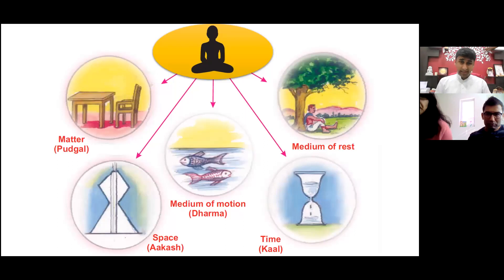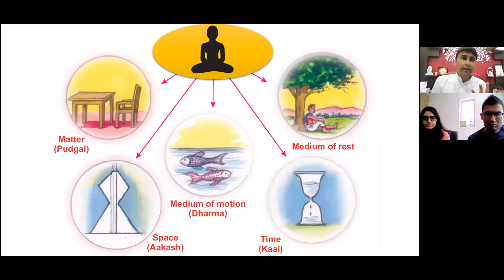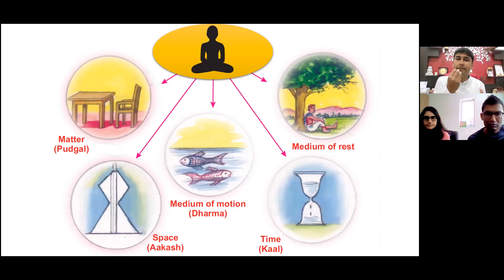With its consciousness, the soul can know and feel. The Purgal — the matter — has the basic qualities of touch (Sparsh), taste (Ras), smell (Gandh), and color (Vorn). So the four special attributes that Purgal has are Sparsh, Ras, Gandh, and Vorn. We can touch it, taste it, it has odor, and we can see it because of its color. All Purgal dravyas have these four special attributes.